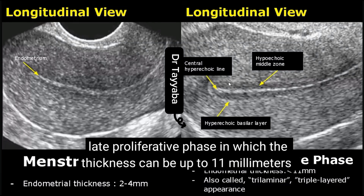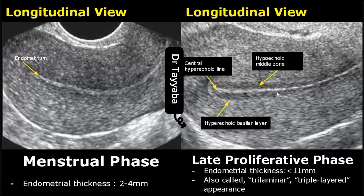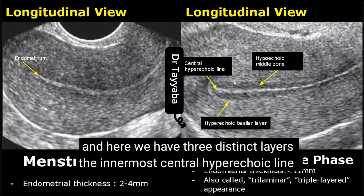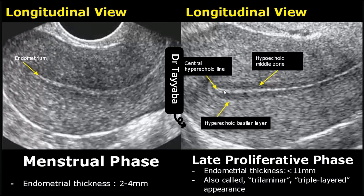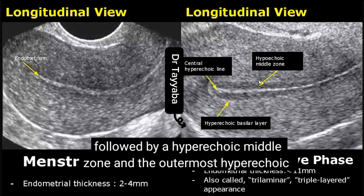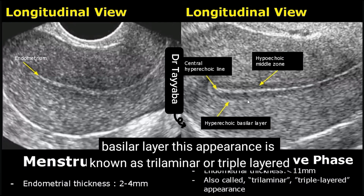Now we have the late proliferative phase, in which the thickness can be up to 11 mm. Here we have three distinct layers: the innermost central hyperechoic line, followed by a hypoechoic middle zone, and the outermost hyperechoic layer. This appearance is known as trilaminar or triple-layered.